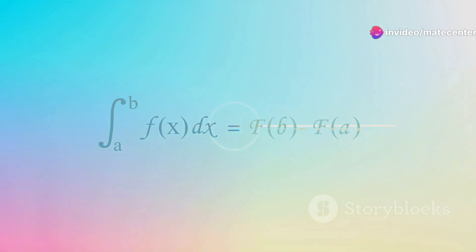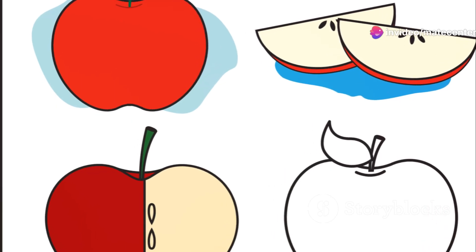Here's how it works. The number on the top of the fraction, known as the numerator, represents the number of parts we have. The number on the bottom, known as the denominator, represents the total number of equal parts the whole is divided into. So in our apple example, we have one part of a total of four, hence one-fourth or 1/4.